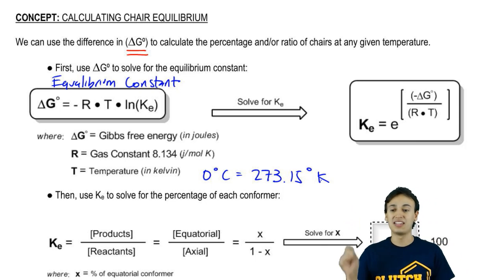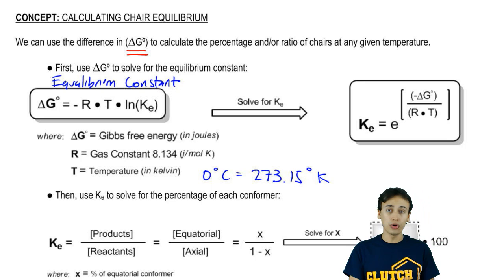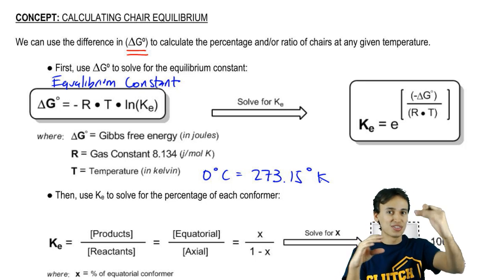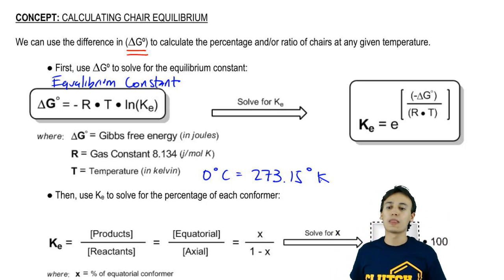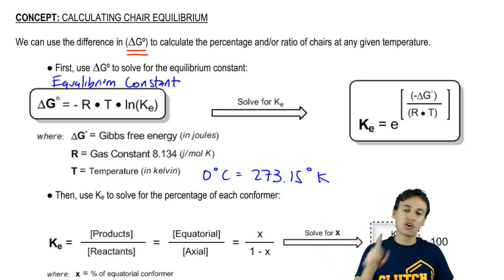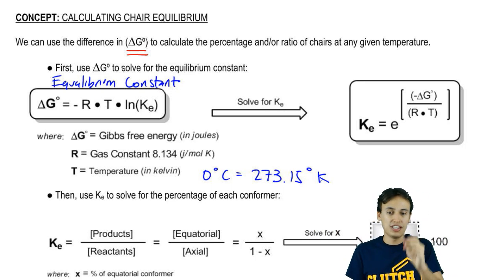Then you're going to multiply that by the natural log of the equilibrium constant. In order to solve any of these problems for percentages, we need to know the value of the equilibrium constant because equilibrium constant by definition tells you what's your products over your reactants. I need to know that fraction. If we go ahead and we solve for Ke - I did the math for you, don't worry - what we get is that the Ke is equal to the negative delta G over the R times the T all to the E.